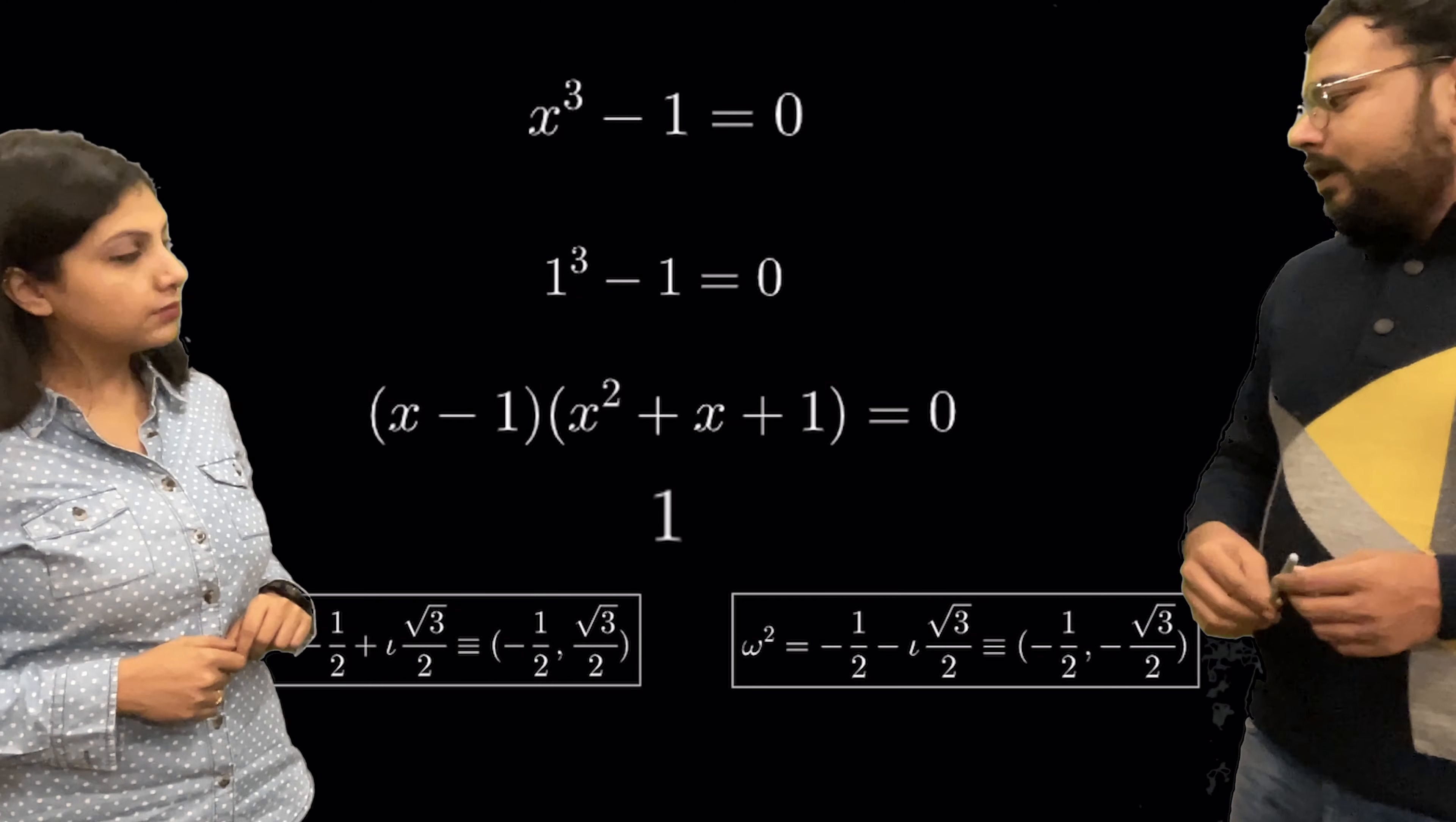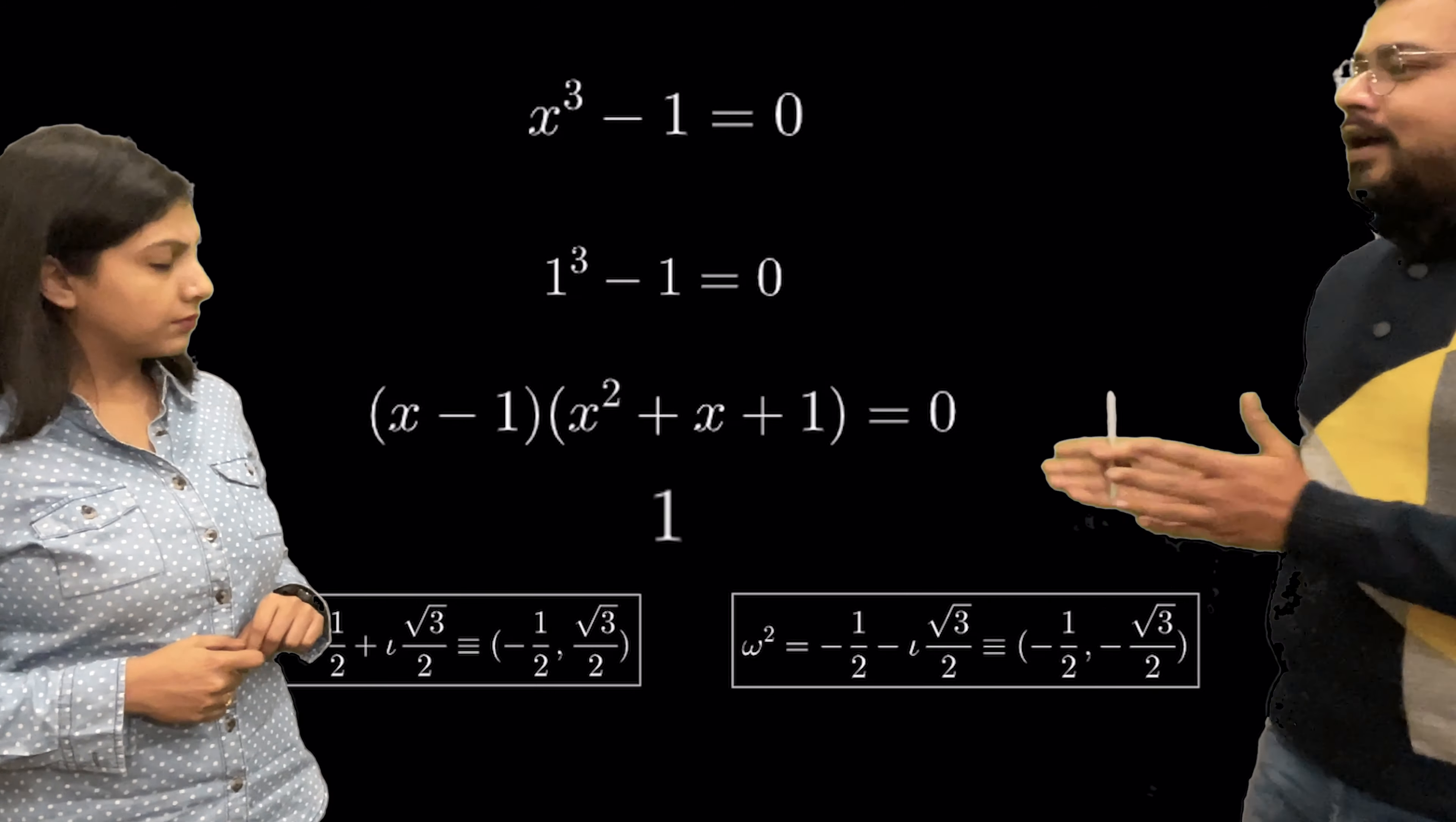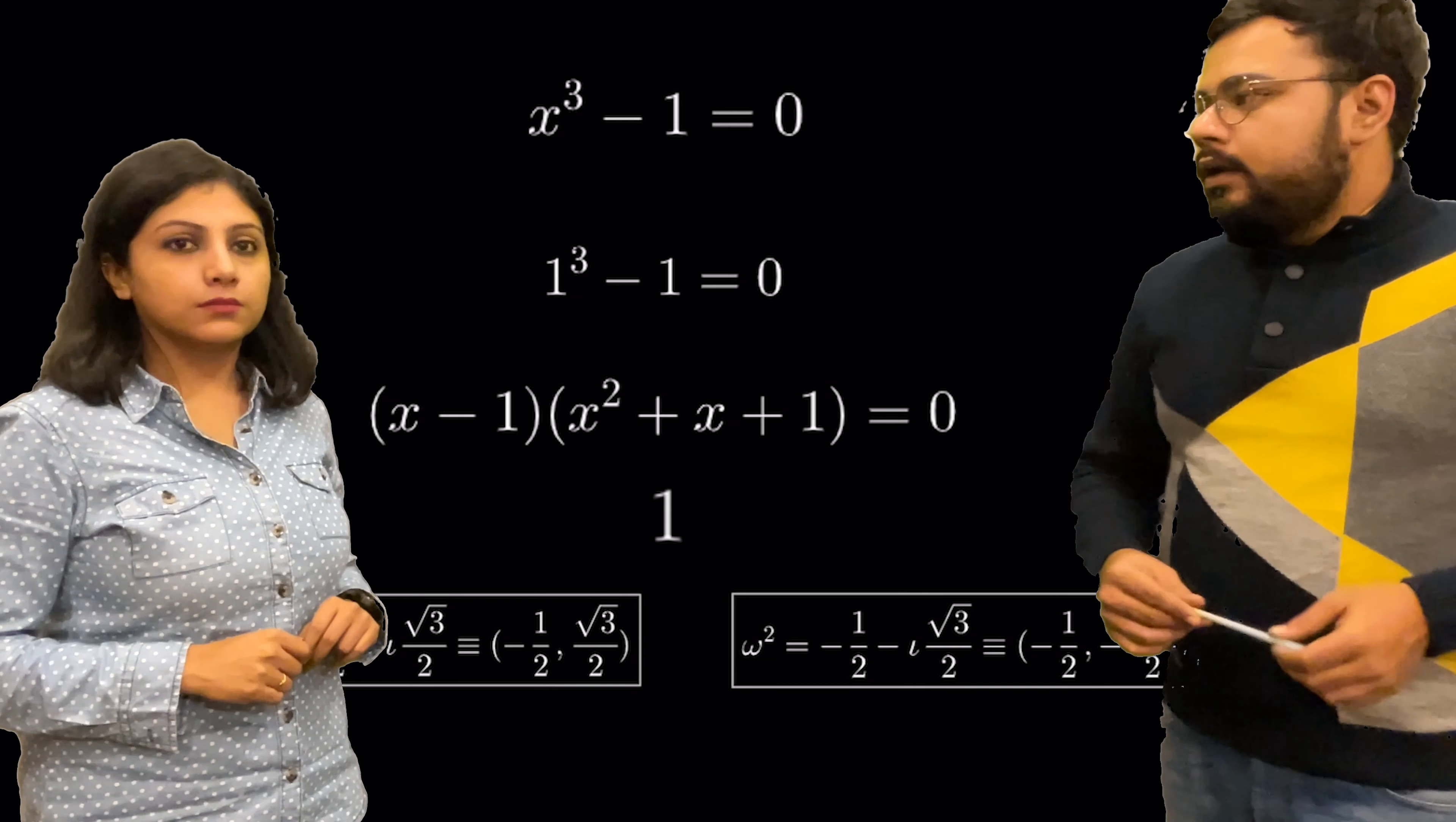So the cube roots of unity are 1, omega and omega square. So you see the complex roots, one of the complex root is taken as omega. Other one is omega square. But why is that so? They are two different complex numbers. Why we are saying one is omega, other one is omega square. So I will ask you this question. If you know why one of these is taken as omega, other one is omega square, if you know that, please comment down below.